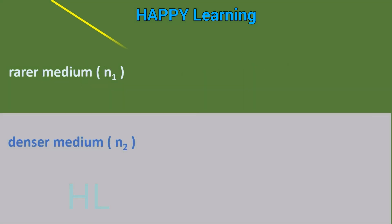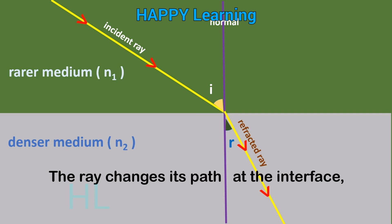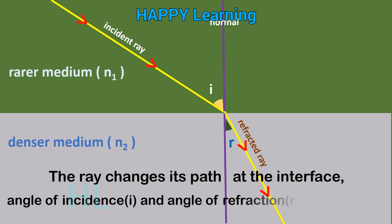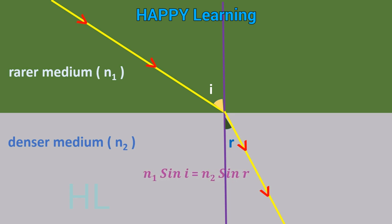Here are the rarer and denser mediums. This is the incident ray and the normal at the point of interface, and the refracted ray. The angle between the incident ray and the normal is called the angle of incidence, represented by i, and the angle between the normal and the refracted ray is called the angle of refraction, represented by r. The ray changes its path at the interface; the angle of incidence i and angle of refraction r are not equal. The relation between i and r is given by n1 sin i = n2 sin r, and this is called Snell's law.